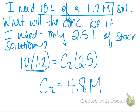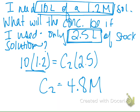When we solve for the final concentration, we already said it should be larger than our initial concentration. How did you get that? I multiplied 10 times 1.2, then divided by 2.5. It doesn't matter what you put on the left and what you put on the right — the sides can be switched. We want to end up with a diluted solution that's 10 liters at a concentration of 1.2 molar, and we're going to use 2.5 liters of stock solution, which gives us a stock concentration of 4.8 molar.